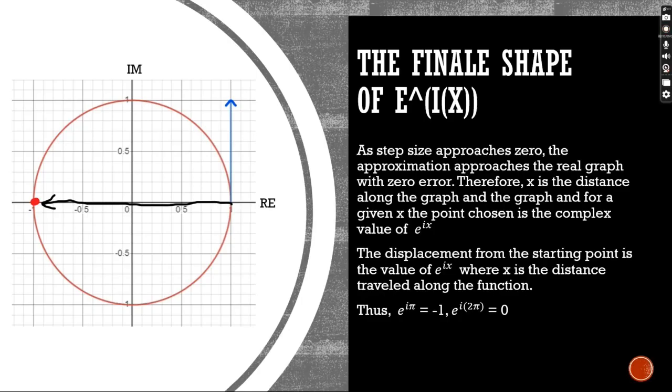So the final shape of e to the ix is actually a circle plotted on the real and imaginary axes. As the step size approaches 0, the approximation approaches the real graph with 0 error. Therefore, x is the distance along the graph, and the graph for a given x, the point chosen is complex value for e to the ix. The displacement from the starting point is the value of e to the ix, where x is the distance traveled along the function.